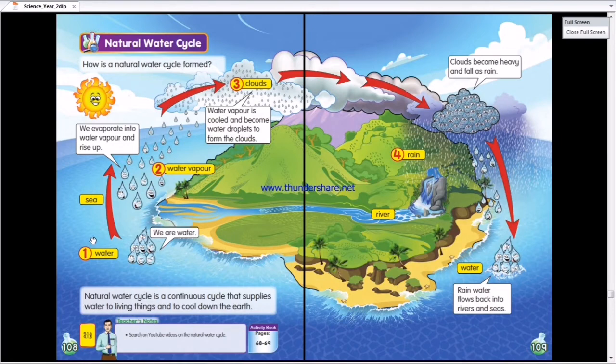First, the water, either from the sea or river, it will evaporate. Evaporate means tersejat. It rises up because of the sun. Because of the heat of the sun, it will rise up. Evaporate.